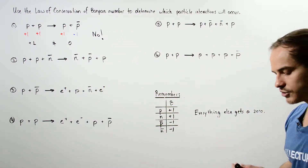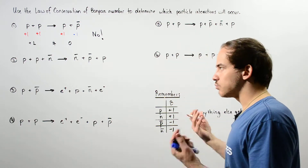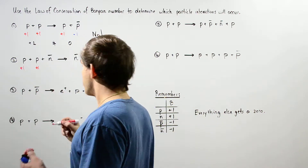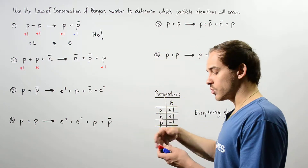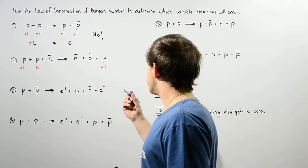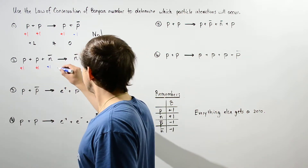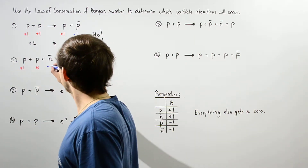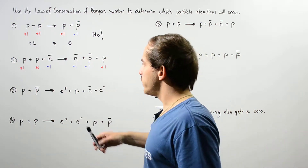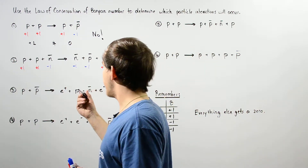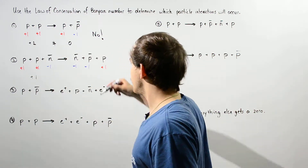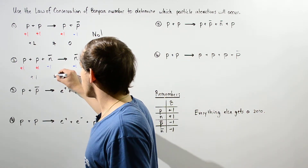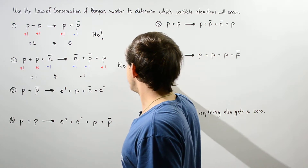Let's move on to interaction two. The protons each get a positive one. The antiparticles — the antineutron and antiproton — each get a negative one. On the left side we have plus one, plus one, minus one, giving us positive one. On the right side we have negative one and negative one, giving us negative one. The baryon numbers are not equal, so this reaction will not take place in nature.